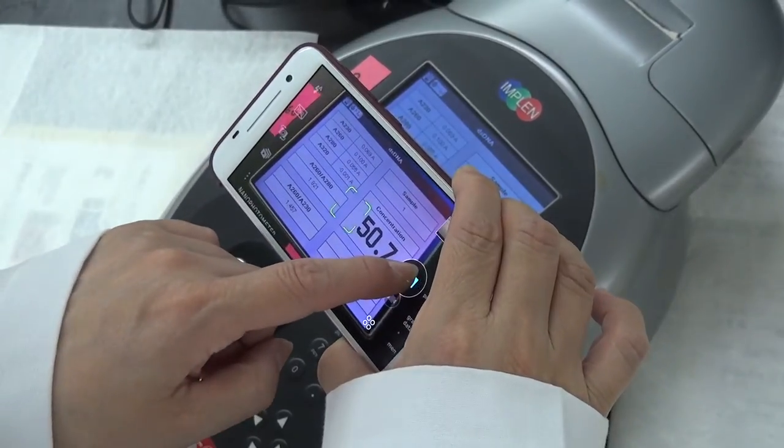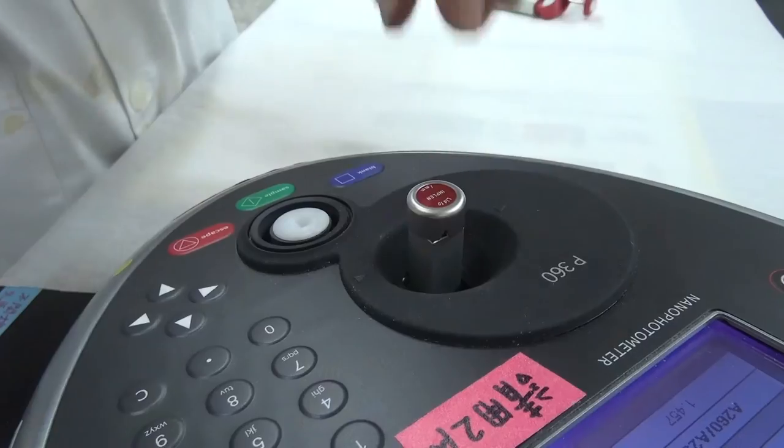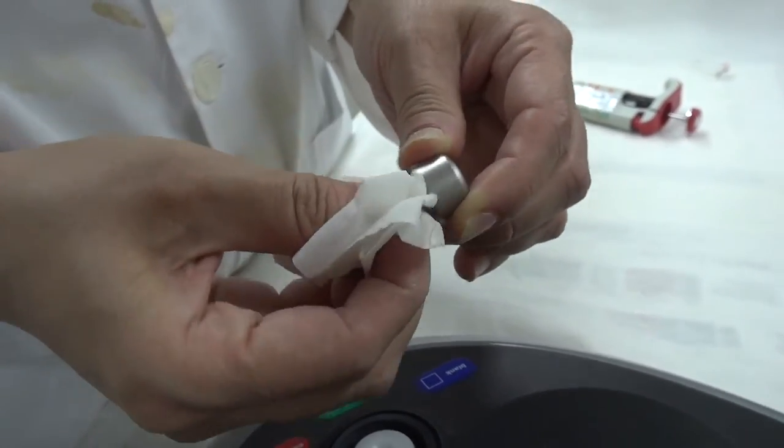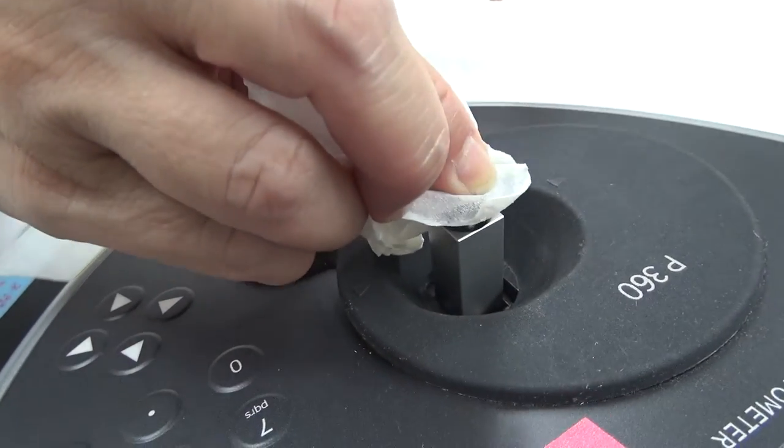15. Use a cell phone to take pictures as a record. 16. Remove the lid. Wipe clean the lid and the sample well of the cuvette with a Kim wipes tissue.